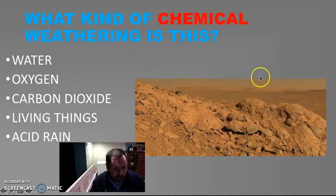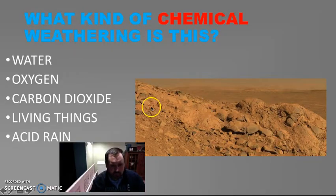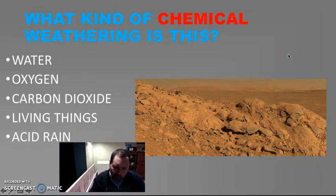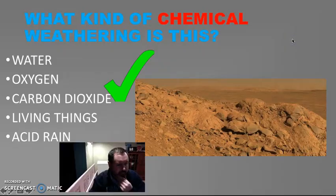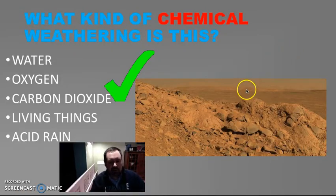This picture is actually a picture on Mars, taken by one of the rovers. Look at the dirt — it's kind of reddish in color. What could have caused that? It's carbon dioxide. Is there oxygen on Mars? I think there is, but there's lots and lots of carbon dioxide on Mars, and the carbon dioxide is causing weathering here. That's kind of a tricky one.